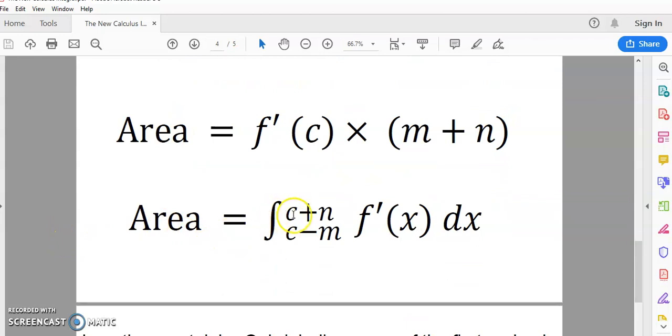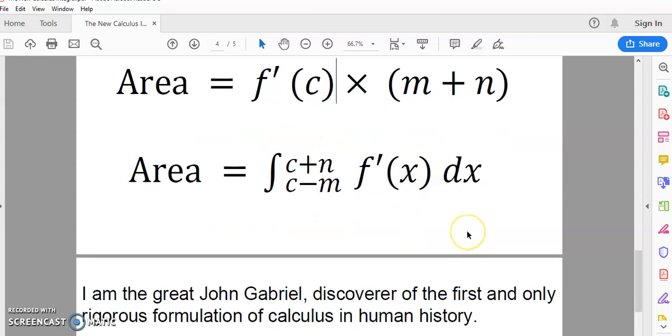And of course, in the mainstream, it's written like this. It's called the integral from c minus m to c plus n of f prime x dx. Now, let's see how this all works.